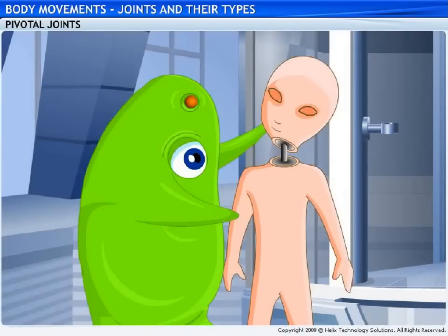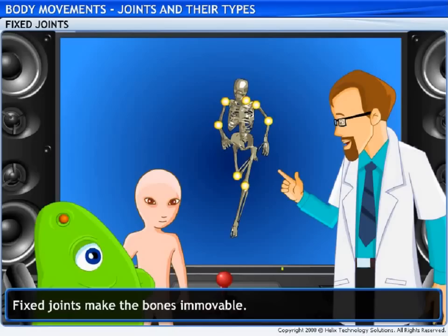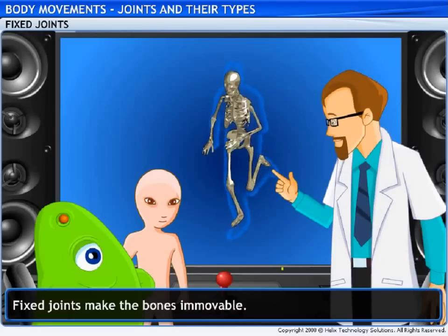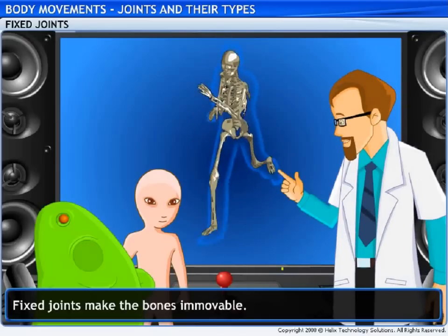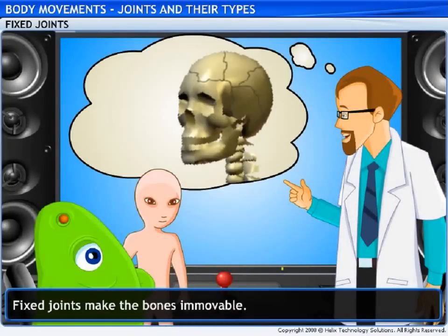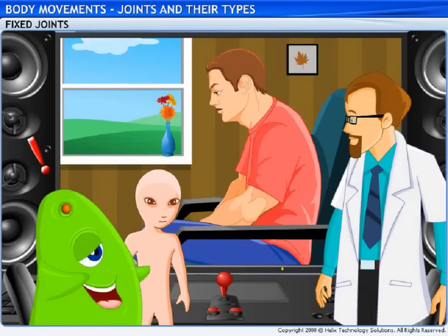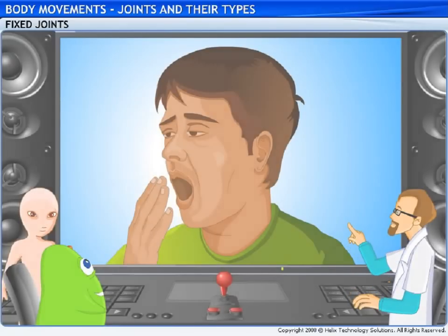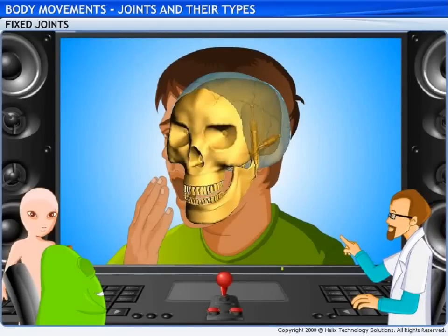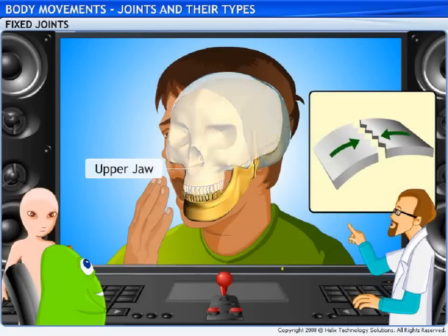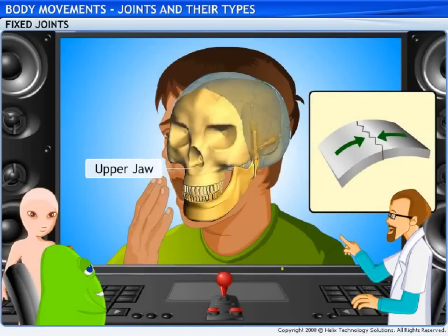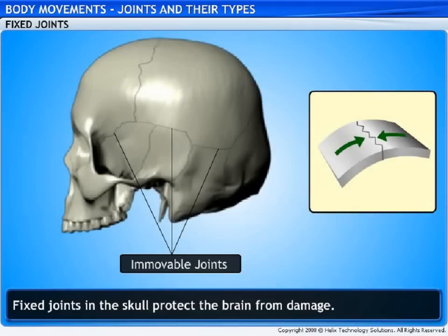Let me add this joint to my clone's neck. There's something else you should know — while most joints in the body help in movement, not all joints aid flexibility. In fact, there are certain joints that make the bones immovable; they are called fixed joints. If you observe closely, you'll notice that he is able to move only his lower jaw away from the head. The upper jaw is connected to the rest of the head through fixed joints and hence it is immovable. In fact, there are several other fixed joints in the skull that protect the brain from damage.